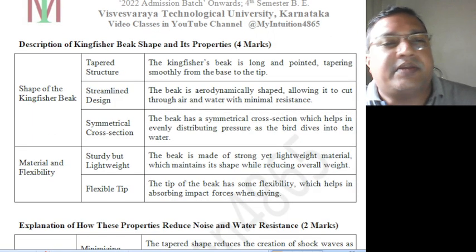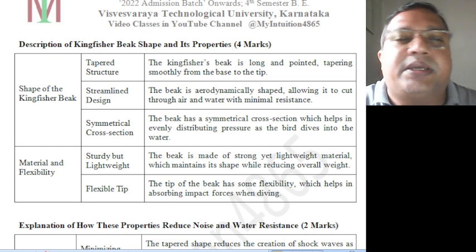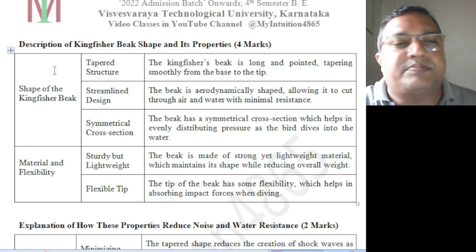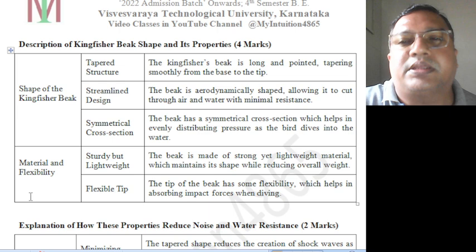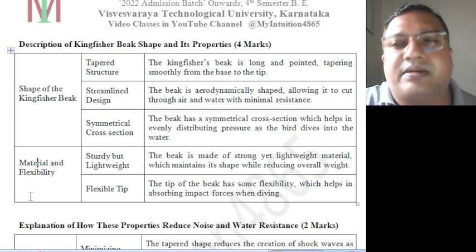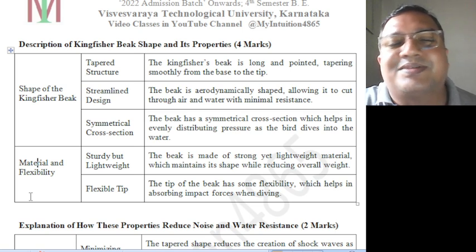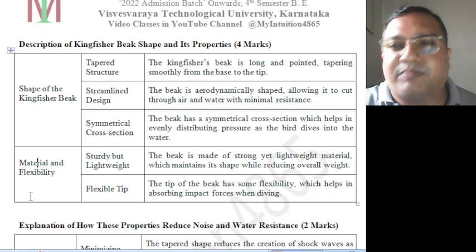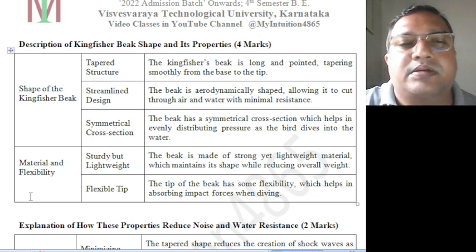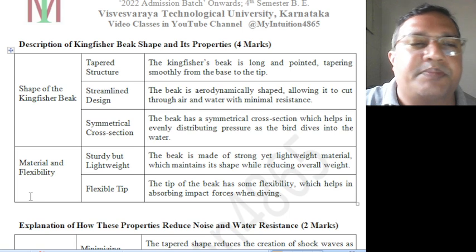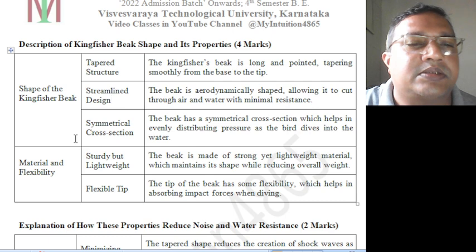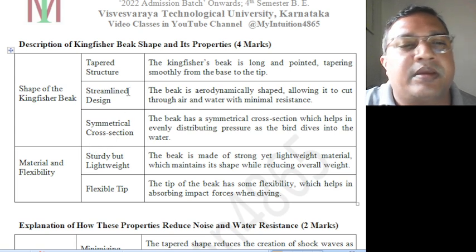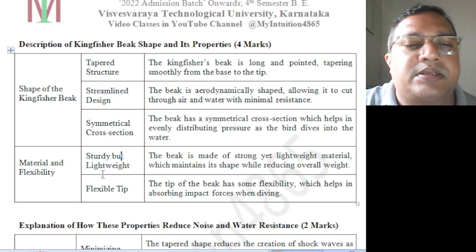Description of kingfisher beak shape and its properties — shape of kingfisher beak, materials, and flexibility. These are the observations done by the Japan researchers to apply biomimicry to their train shape. The kingfisher beak has a tapered structure, a streamlined design, and a symmetrical cross section.